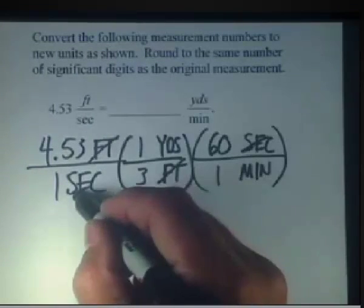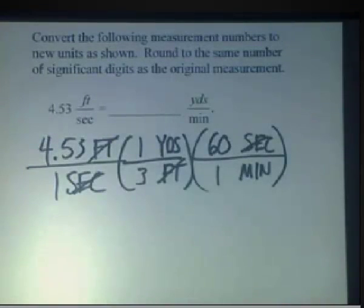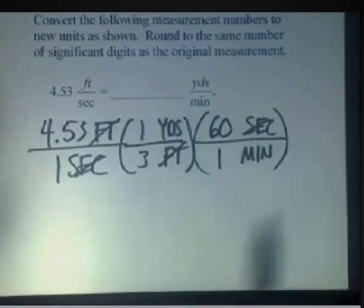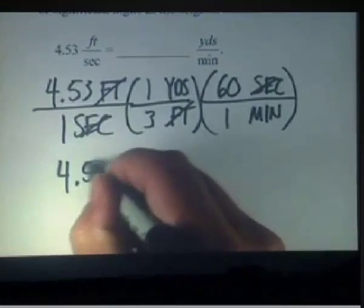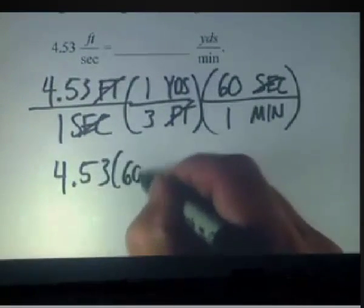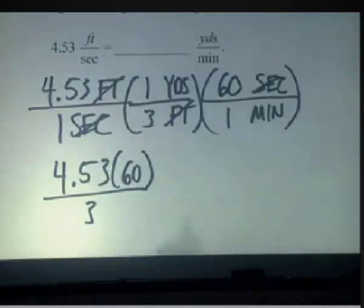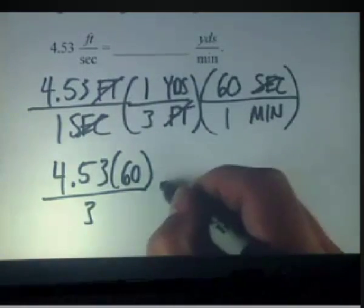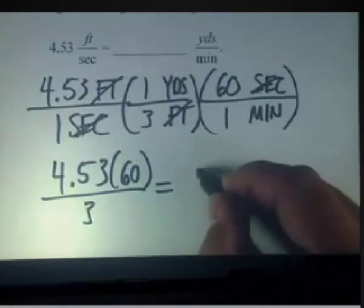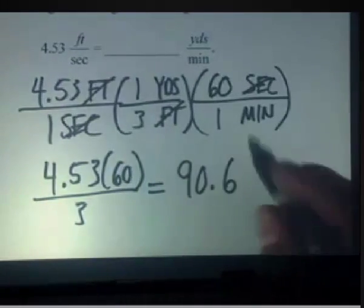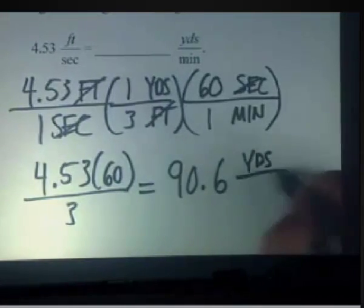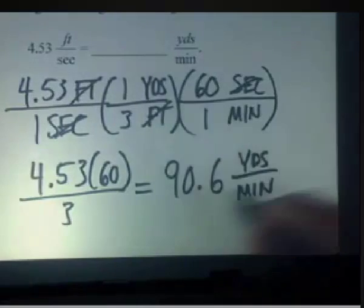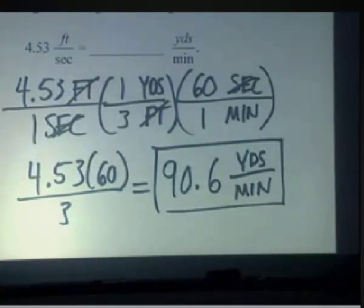We then get our seconds to cancel out. Now we simply multiply straight across the top, straight across the bottom. We have 4.53 times 60, all over 3, remembering that we're going to end up with yards per minute. If you put this into your calculator or do it by hand, you're going to come up with a value of 90.6. Don't ever forget to label — we want yards per minute to follow our value. So 90.6 yards per minute.